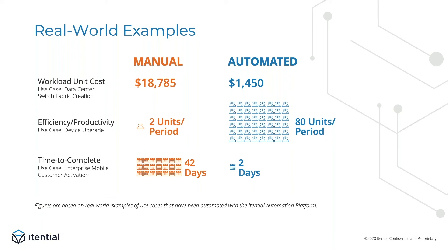The metric highlighted in the second use case is efficiency and productivity. The team looked at productivity gained through automation for device upgrades. In the pre-automated scenario, one engineer could upgrade two devices in a maintenance window, giving an efficiency and productivity metric of two. Once the team deployed automation, a single engineer upgraded 80 routers in a maintenance window. What was interesting was that once they implemented automation, it wasn't the automation system that defined the upper boundary of how many devices could be upgraded — the limit was driven by concerns from the operations and networking teams about making too many simultaneous changes to the network. Once you eliminate the human factor, the automation system has the capability to go a lot faster than other parts of the business.